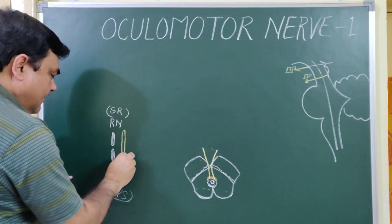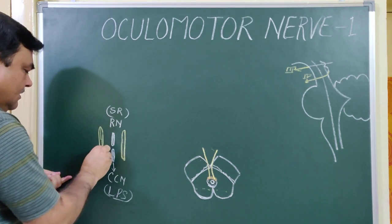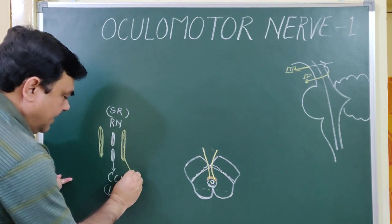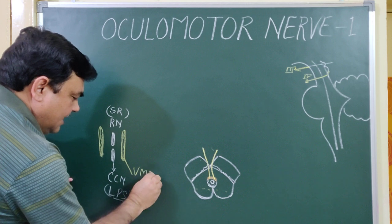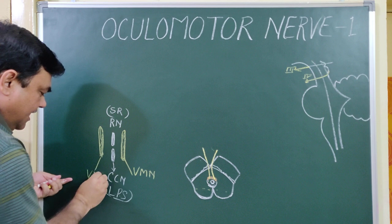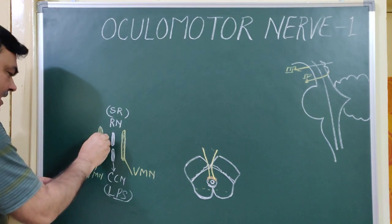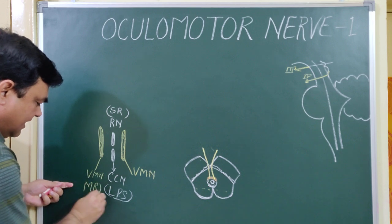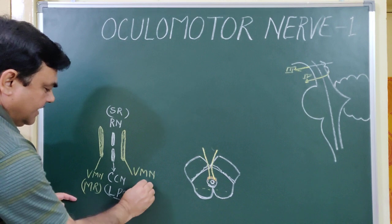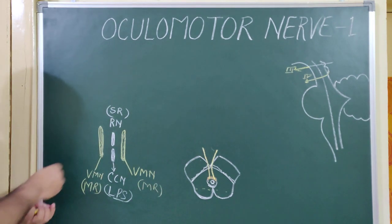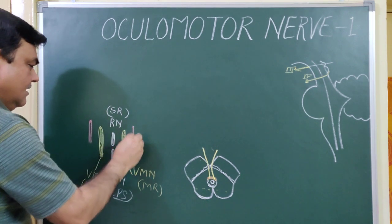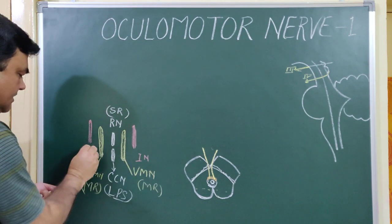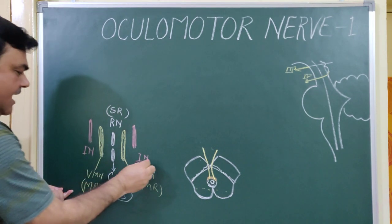Lateral to this on both sides is the ventral medial nucleus. This nucleus gives nerve fibers for the medial rectus muscle. There is also the intermediate nucleus, which gives fibers to the inferior oblique muscle.